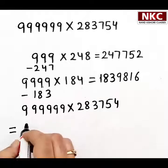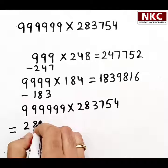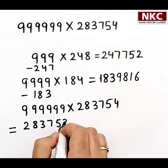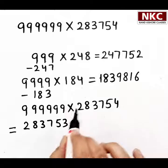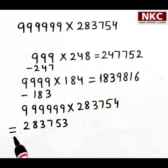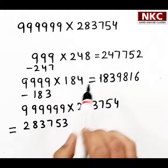First of all, one number less than 283754 is 283753. In the first line, I wrote 283753, one number less than that. I specifically placed this 283753 below the 9's so that I can subtract easily without showing these extra steps.